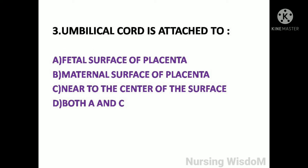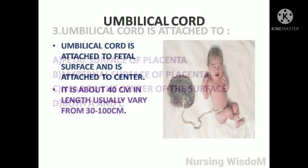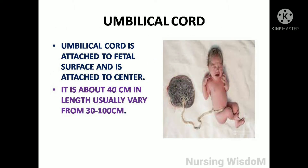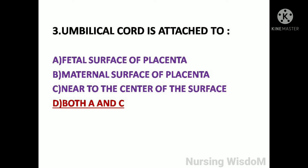Next question: The umbilical cord is attached to — option A: fetal surface of placenta; option B: maternal surface of placenta; option C: near to the center of the surface; option D: both A and C. The umbilical cord is attached to the fetal surface and is attached near the center. It is about 40 cm in length, usually varying from 30 to 100 cm. So here the answer is option D, both A and C.